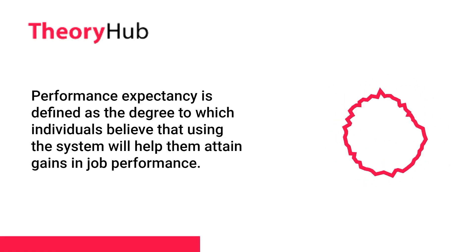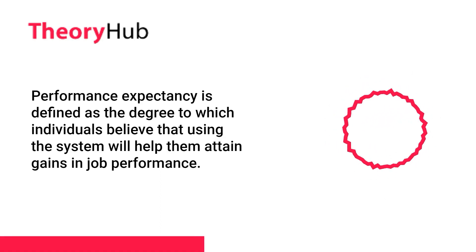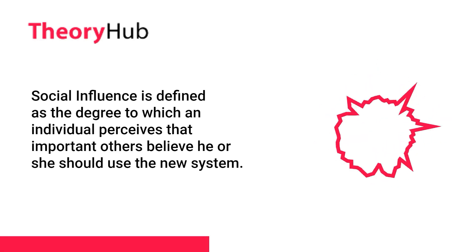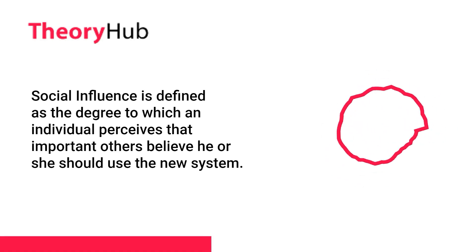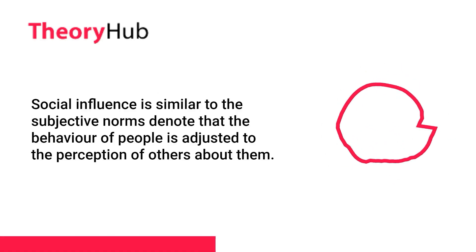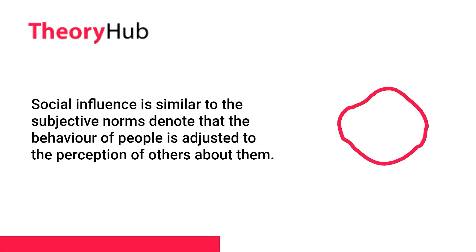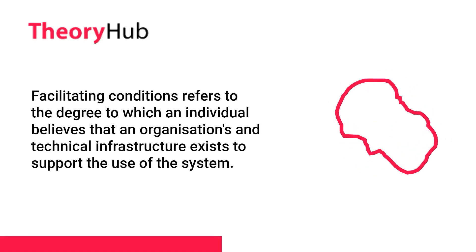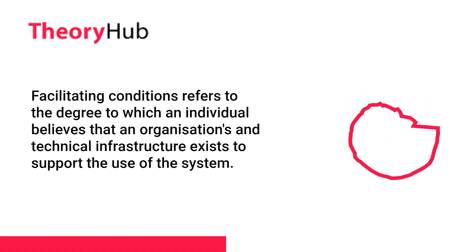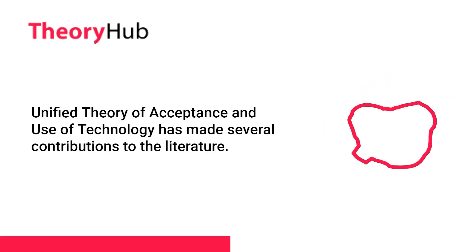Performance expectancy is defined as the degree to which individuals believe that using the system will help them attain gains in job performance. Effort expectancy is defined as the degree of ease associated with the use of the system. Social influence is defined as the degree to which an individual perceives that important others believe he or she should use the new system. Facilitating conditions refers to the degree to which an individual believes that an organizational and technical infrastructure exists to support the use of the system.